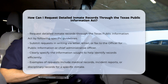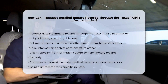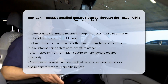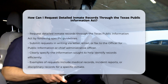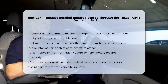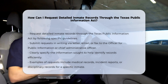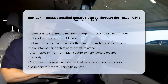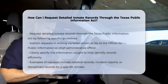Making the request: You must submit your request in writing. This can be done via a letter, email, or fax. The request should be addressed to the officer for public information or the chief administrative officer of the governmental body, such as the Texas Department of Criminal Justice.